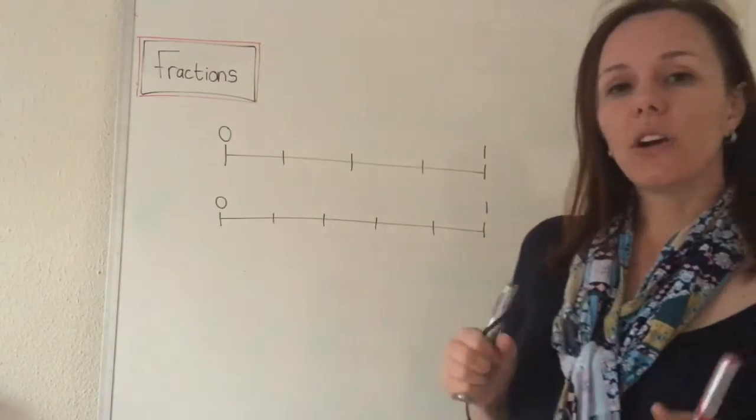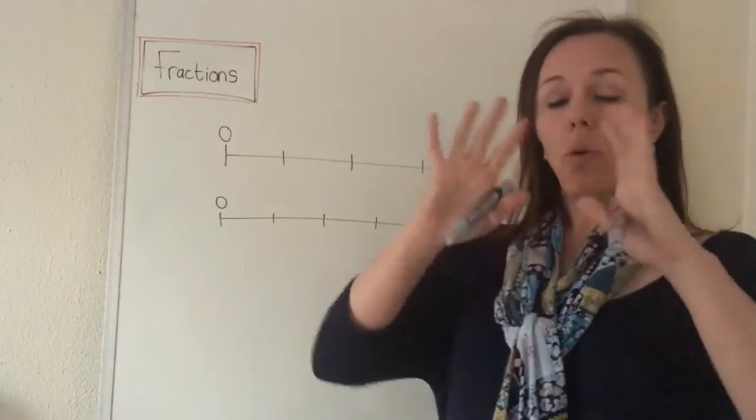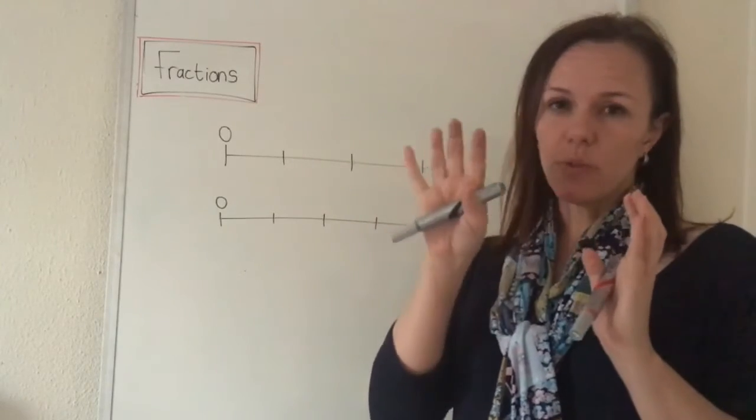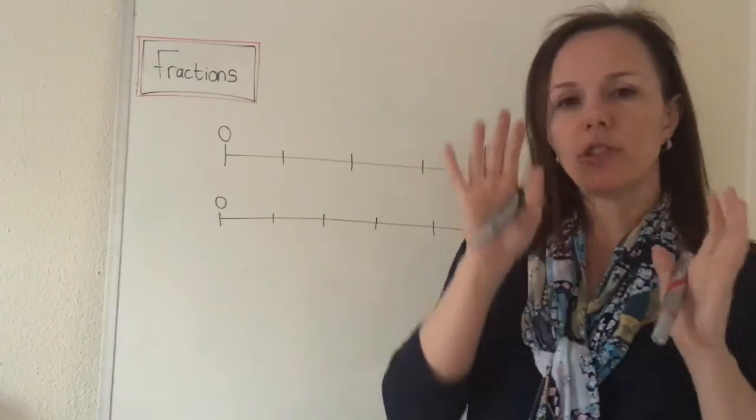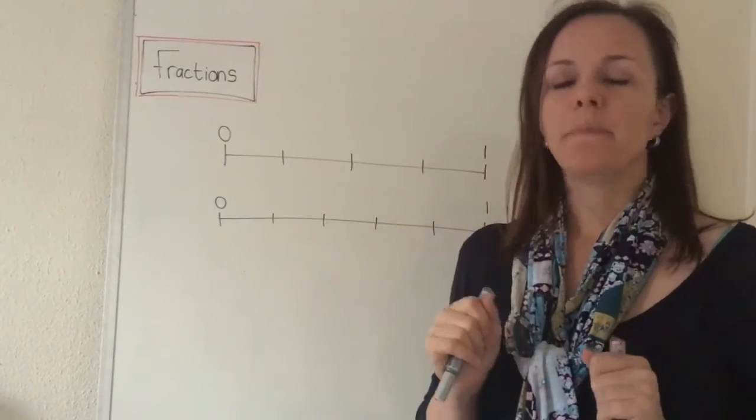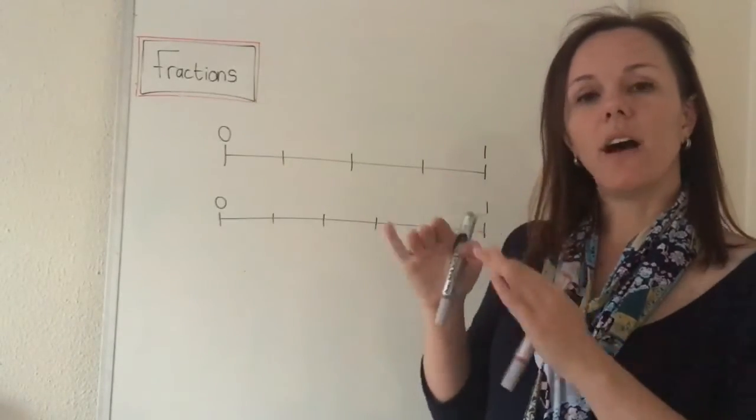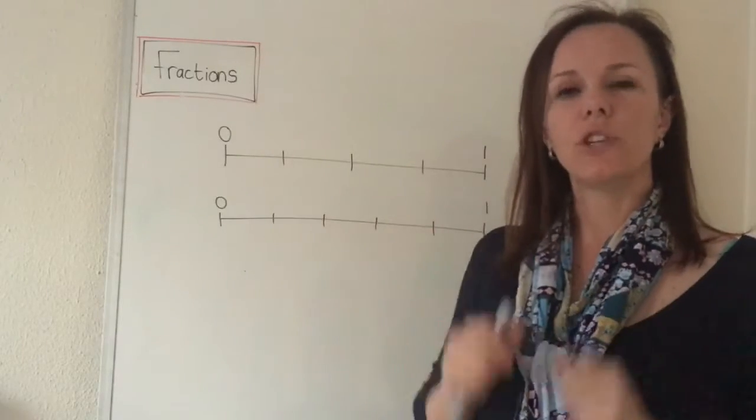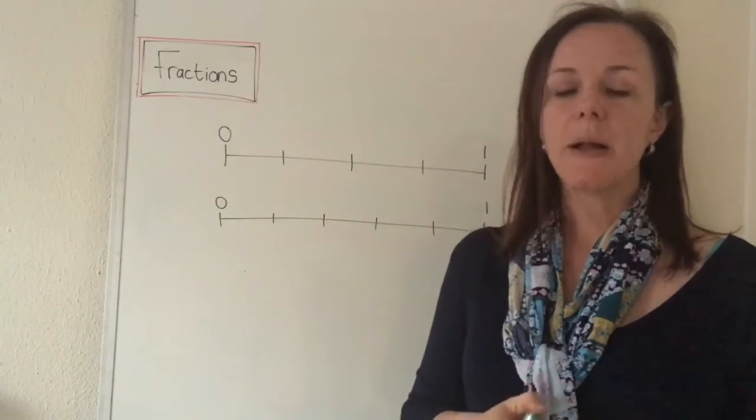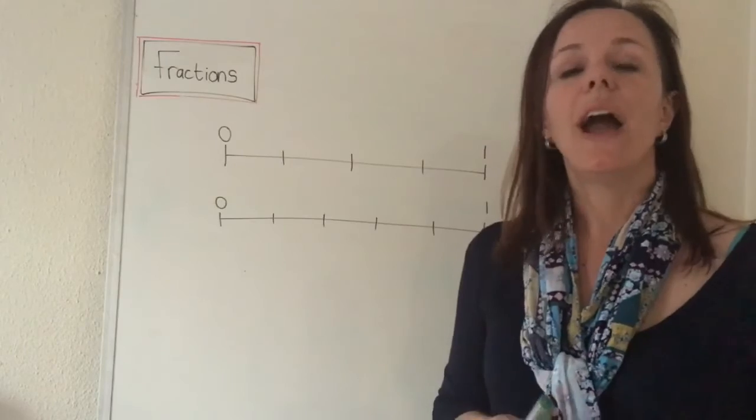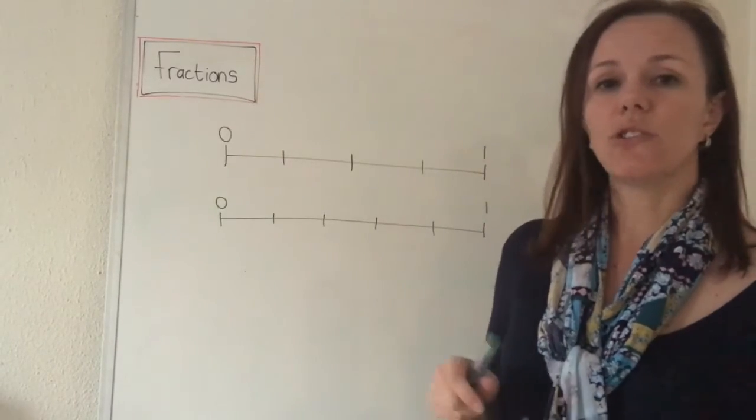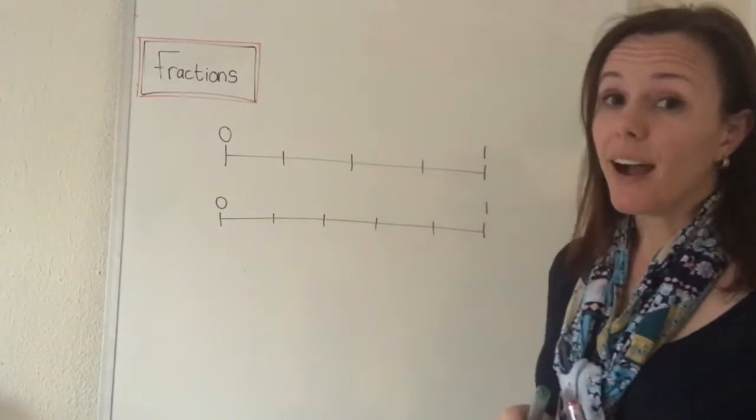So we looked at seeing one shape as fractions when we divide one circle or a square into different parts, and we looked at how we can take different objects and divide them into fractions by grouping them, like if we share something between friends. Now today I want to show you how we can view fractions on a number line.